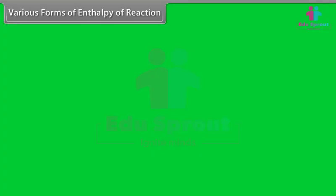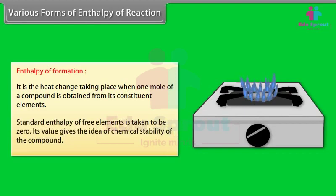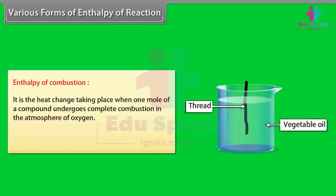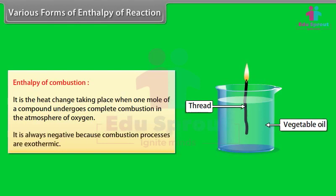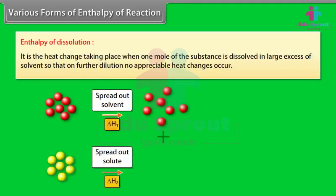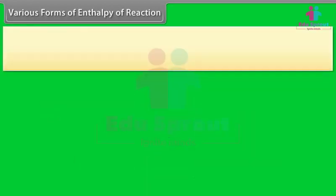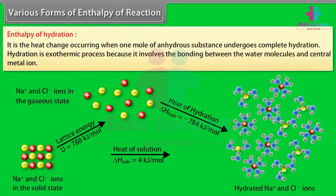Various forms of enthalpy of reaction. Enthalpy of formation: the heat change when one mole of a compound is obtained from its constituent elements; standard enthalpy of free elements is taken as zero. Enthalpy of combustion: the heat change when one mole of a compound undergoes complete combustion in oxygen; always negative as combustion is exothermic. Enthalpy of dissolution: the heat change when one mole of substance dissolves in a large excess of solvent. Enthalpy of hydration: the heat change when one mole of anhydrous substance undergoes complete hydration; an exothermic process.